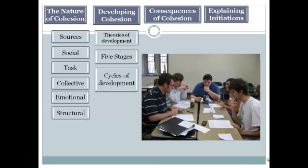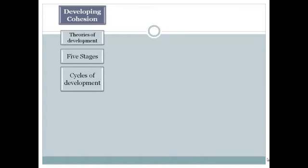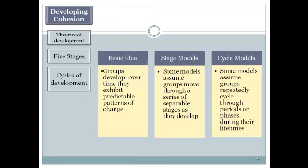Now we're going to be talking about how groups develop and how cohesiveness in groups develops as well. But really this is about group development. The idea is that for the most part, groups seem to develop in a relatively predictable way. The patterns of change seem to be pretty much universal, and that's the basic idea behind the theories of group development.